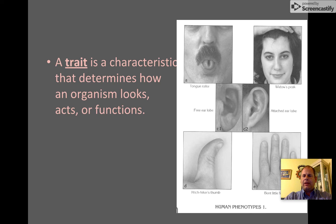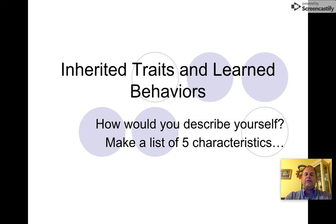Do you have some of these traits? Are you a tongue roller? Do you have a widow's peak in your hairline? Do you have a free earlobe that hangs, or an attached earlobe? Do you have a hitchhiker's thumb? What about a little finger? These are all examples of inherited traits.